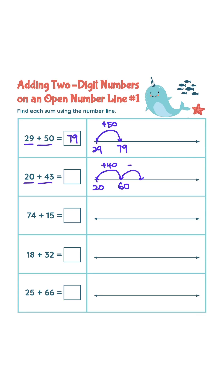60 plus 3 is 63. Answer is 63. 74 plus 15. 74 plus 10 is 84. 84 plus 5 is 89.